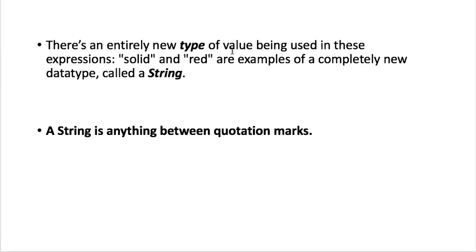So there's an entirely new type of value being used in these expressions. Solid and red, right? Those are not numbers, clearly. But they're a new type of data, a data type called string. And we learned about strings in Python. Python also uses quotes to tell the computer that these are strings. So in racket language, a string is anything between quotation marks.